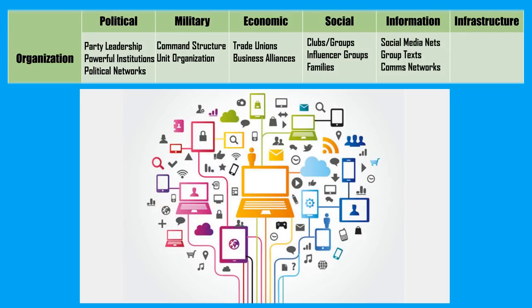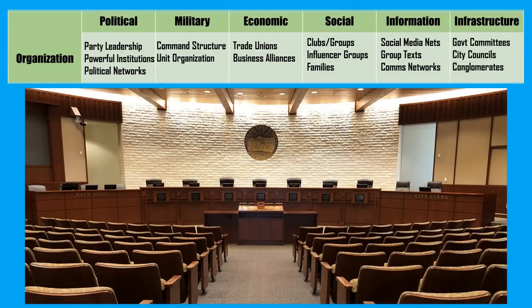Up next is information organization — social media networks, group texts and communications networks. How are radio networks in the area set up? Are there large amateur groups that we can exploit and get to work for us? Are there influencer-created networks we can lean on — social media influencers that can create their own communities? We can also consider traditional media — TV, news, radio — that can do our bidding. Moving on to infrastructure organization, we have things like government committees, city councils, county commissioners, even large construction companies and conglomerates heavily embedded in government. A large portion of city council members and county commissioners are very heavily invested in the real estate community — that's a huge thing to consider as well.